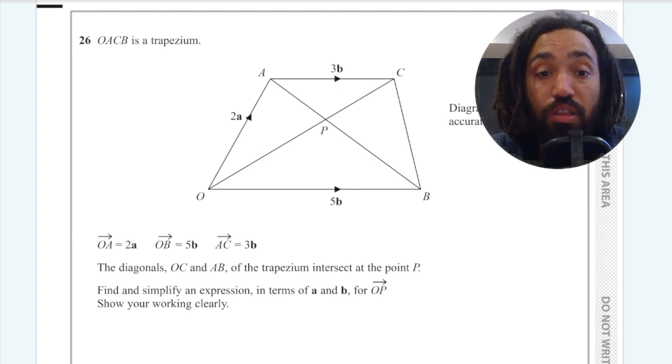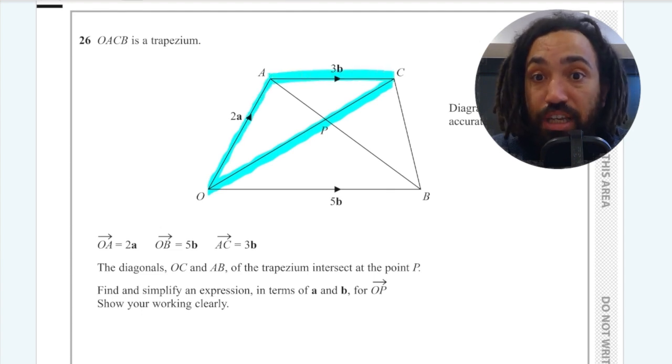First off, the first thing you'd want to do in any vectors question is try to find as many vectors that are not actually labelled yet because you could get one or two marks for that. So the first one I'm going to try and find is OC which is 2A plus 3B and that's going to get me one mark.